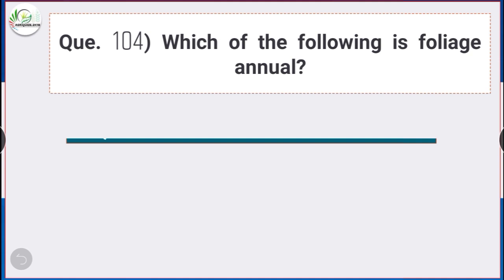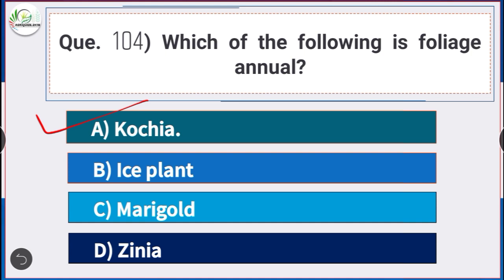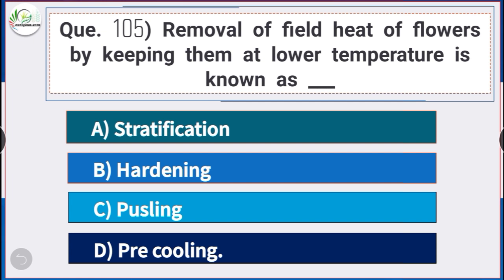Question number 104: Which of the following is a foliage annual? Answer is option E — kochia. Kochia is an example of a foliage annual.